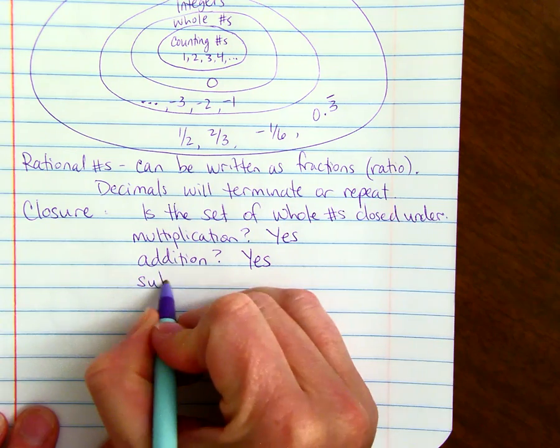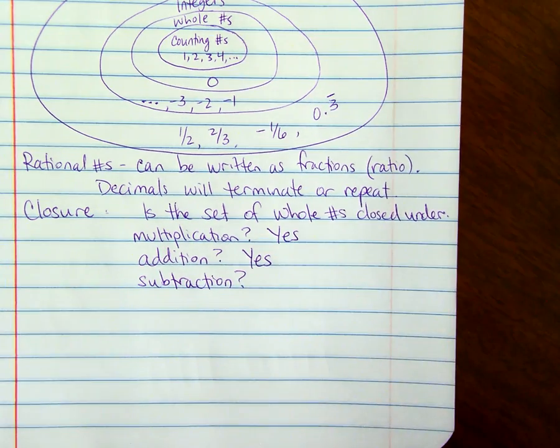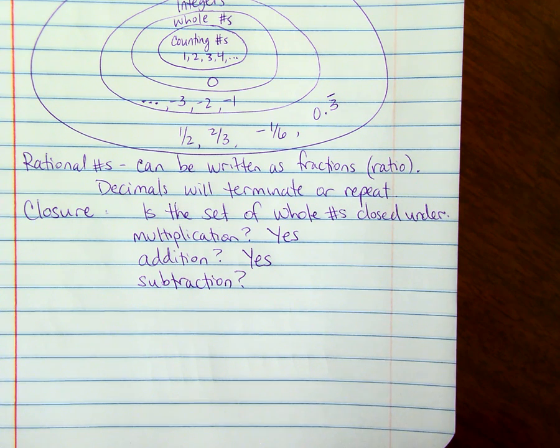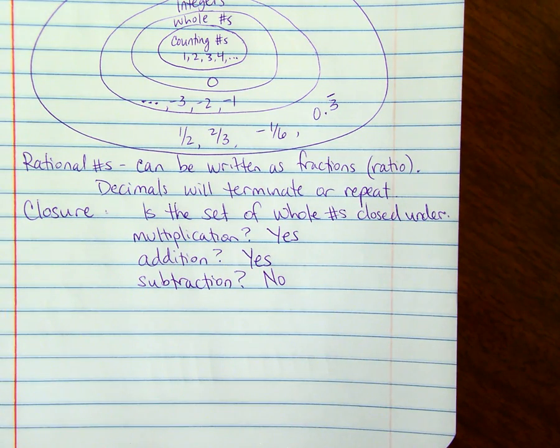If it's subtraction, if I took the whole number zero and subtracted the whole number ten, I would go into the negatives. It would no longer be a whole number. So the set of whole numbers is not closed under subtraction, because you can subtract a bigger whole number from a smaller whole number and get out of the set of whole numbers.